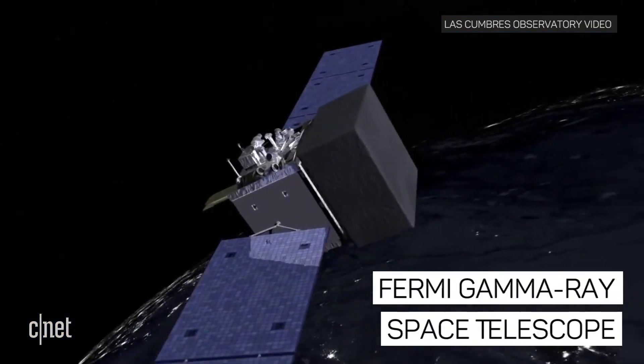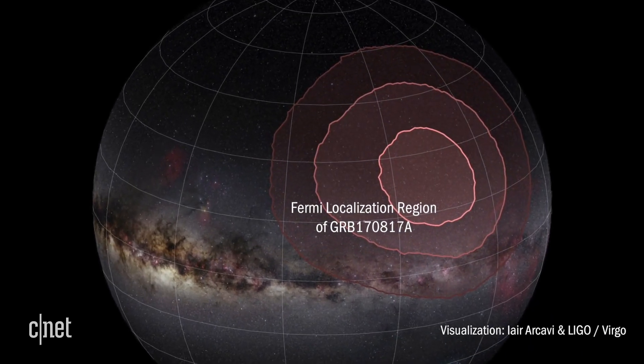At the same time, the NASA Fermi satellite detected gamma rays coming from the same direction in the sky.